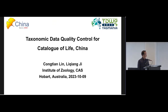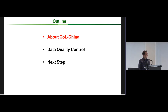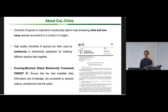Today I want to talk about taxonomy data quality control for Catalogue of Life China. This is the outline. Firstly, I want to tell about the Catalogue of Life China, and I will go through this part quickly. Next is about data quality control, and finally is about our plan and the next step.